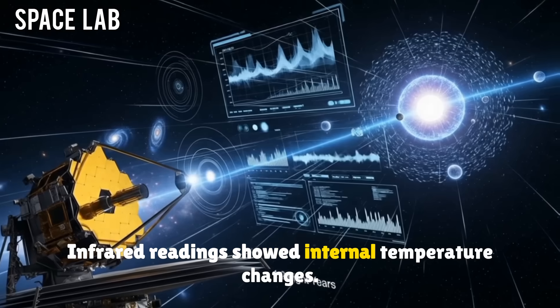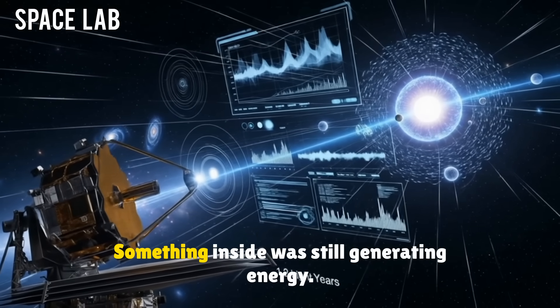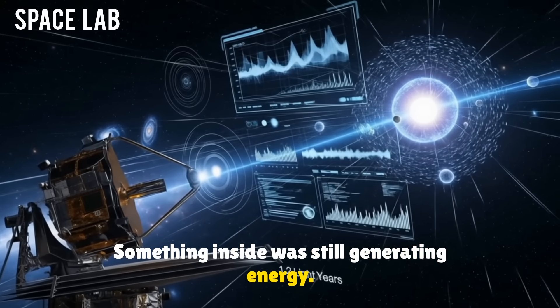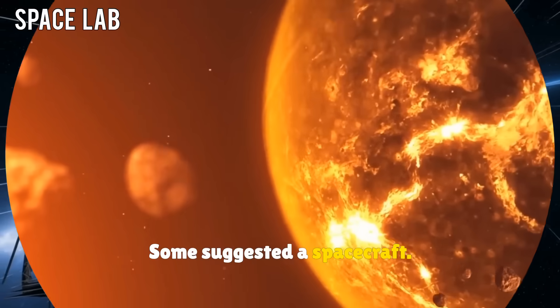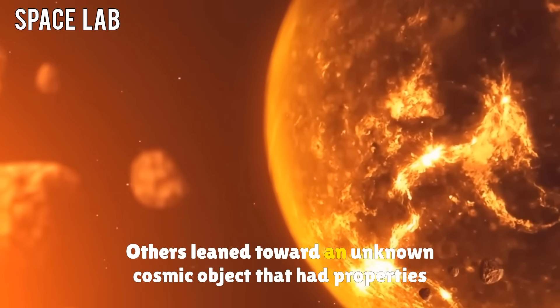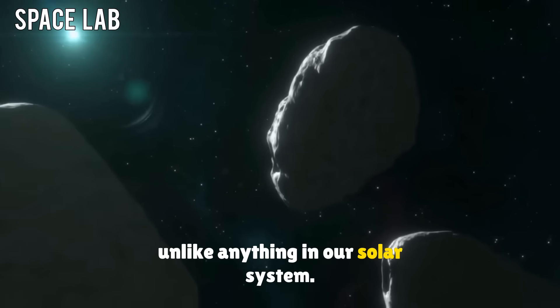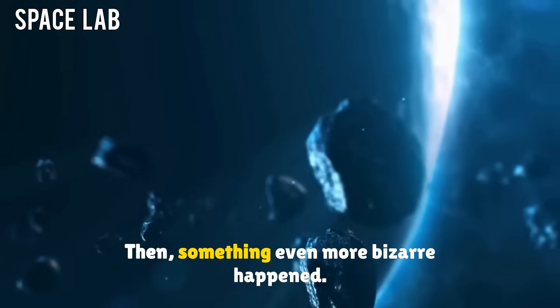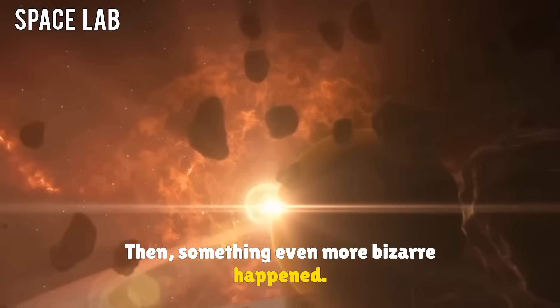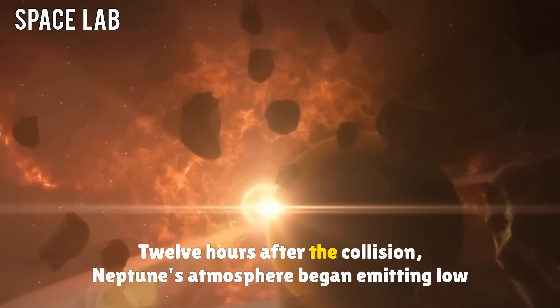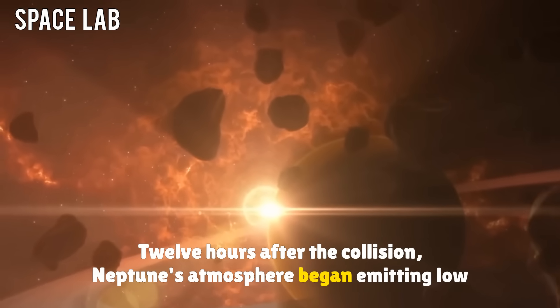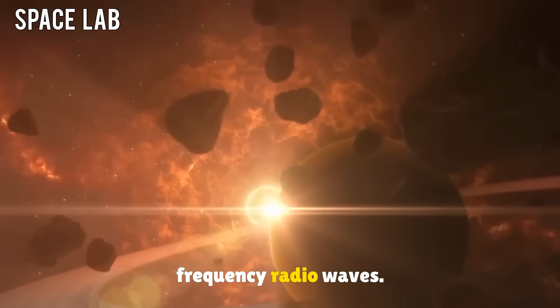Infrared readings showed internal temperature changes. Something inside was still generating energy. Some suggested a spacecraft. Others leaned toward an unknown cosmic object that had properties unlike anything in our solar system. Then, something even more bizarre happened. Twelve hours after the collision, Neptune's atmosphere began emitting low-frequency radio waves.